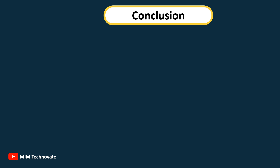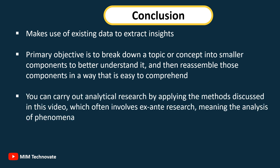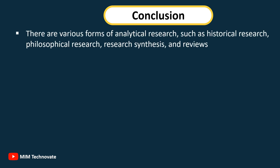Conclusion: Analytical research is a type of research that makes use of existing data to extract insights. Its primary objective is to break down a topic or concept into smaller components to better understand it, and then reassemble those components in a way that is easy to comprehend. You can carry out analytical research by applying the methods discussed in this video, which often involves ex-ante research, meaning the analysis of phenomena. There are various forms of analytical research, such as historical research, philosophical research, research synthesis, and reviews.